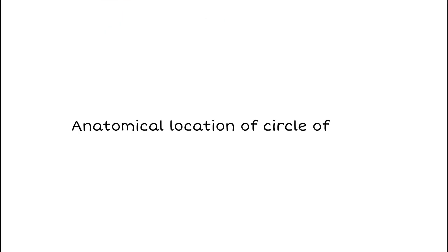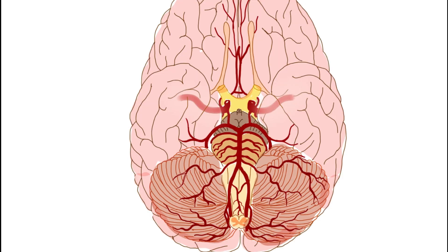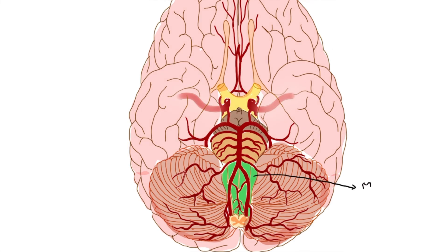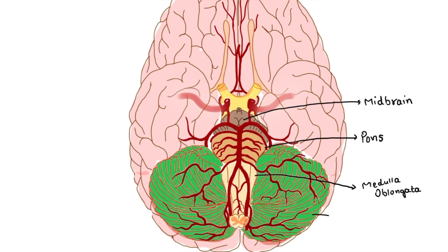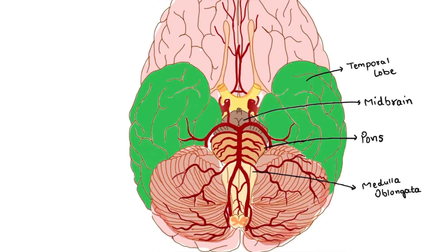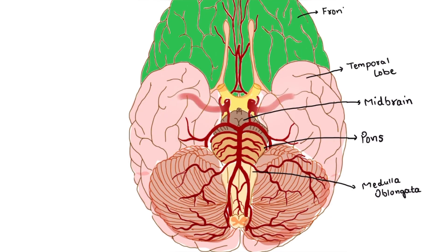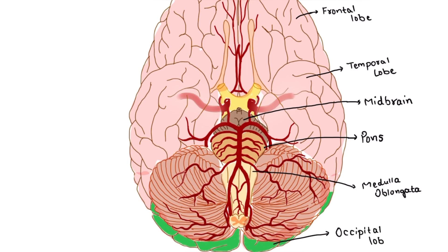Now let's see the anatomical location of the Circle of Willis and the branches arising from the vertebral artery and internal carotid artery. First, the anatomy of the brain — here we have the medulla oblongata, pons, midbrain, cerebellum, temporal lobe, frontal lobe, and occipital lobe.